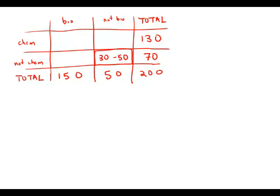If it ranged from 30 to 50, what it means is that the people who are not in biology would range from 0 to 20. The people who are in bio but not in chem would range from 20 to 40.